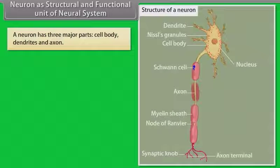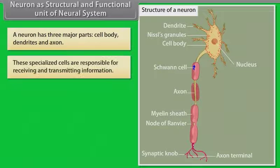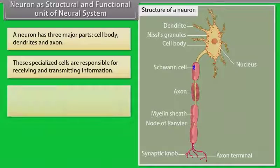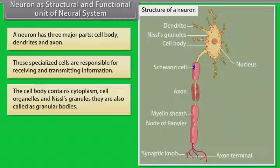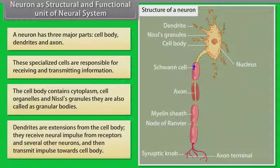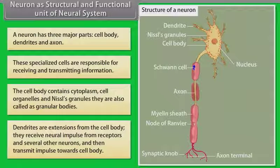A neuron has three major parts: cell body, dendrites and axon. These specialized cells are responsible for receiving and transmitting information. The cell body contains cytoplasm, cell organelles and Nissl's granules, also called granular bodies. Dendrites are extensions from the cell body. They receive neural impulses from receptors and several other neurons and then transmit impulses towards the cell body.